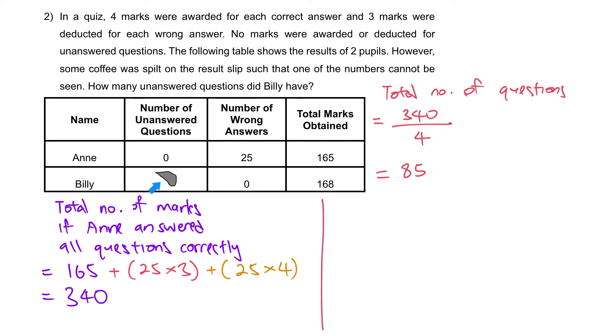Next, knowing this, we can start to figure out how many unanswered questions Billy has. Given that Billy had no wrong answer, these 168 marks got to come from the correct answers. So we are going to figure out number of questions Billy answered correctly. We are going to take 168 divided by 4 and that will give us 42.